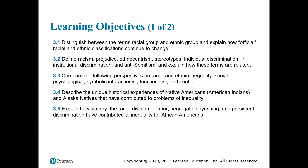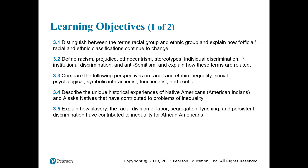Compare the following perspectives on racial and ethnic inequality: social, psychological, symbolic interactionist, functionalist, and conflict. Describe the unique historical experiences of Native American Indians and Alaska Natives that have contributed to problems of inequality. Explain how slavery, the racial division of labor, segregation, lynching, and persistent discrimination have contributed to inequality for African Americans.